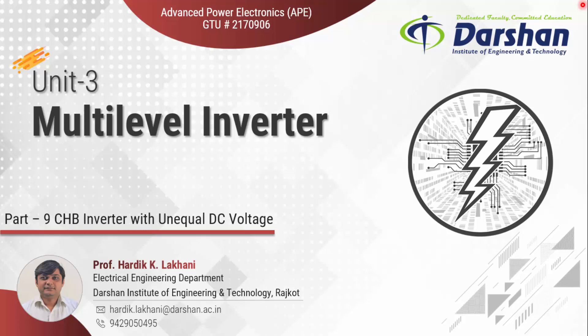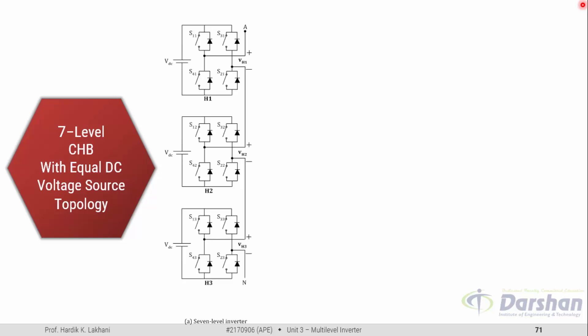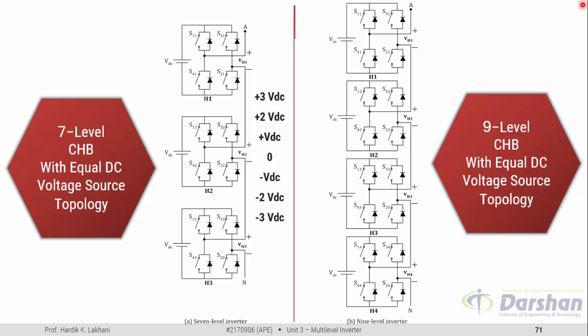This part covers CHB inverter with unequal DC voltage. Before explaining this concept, let me quickly review the CHB inverter with equal DC voltage source. For a seven-level CHB with equal DC voltage source, we need three cells of H-bridge units. For a nine-level CHB with equal DC voltage source, we need four H-bridge cells, and these are the levels we can produce with that nine-level CHB inverter.